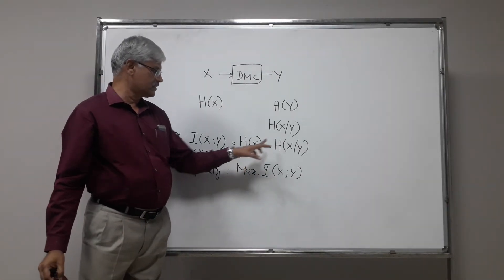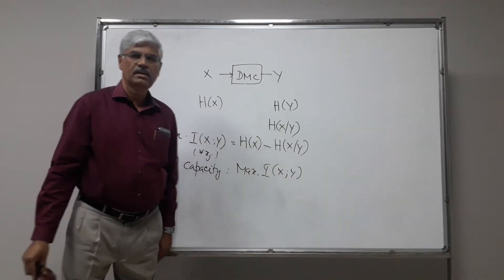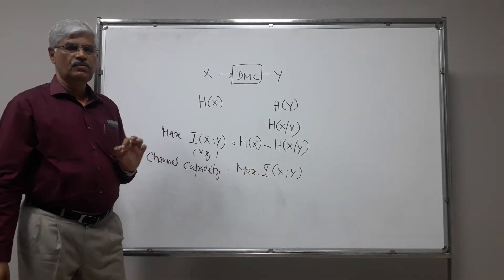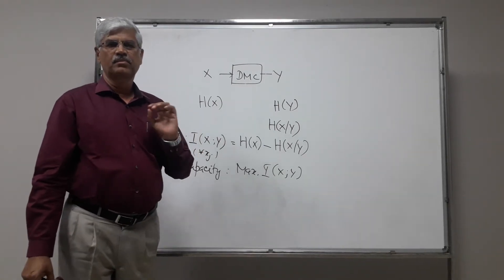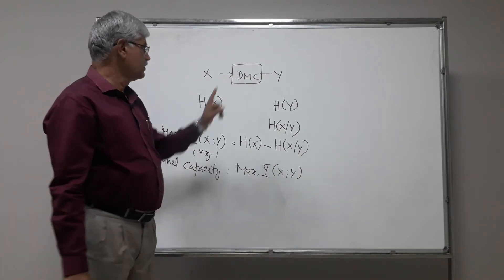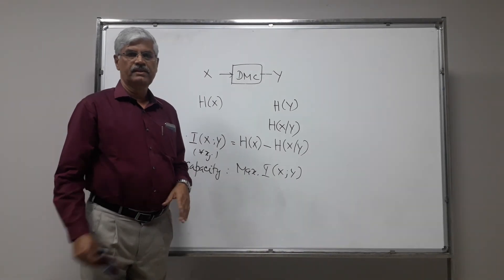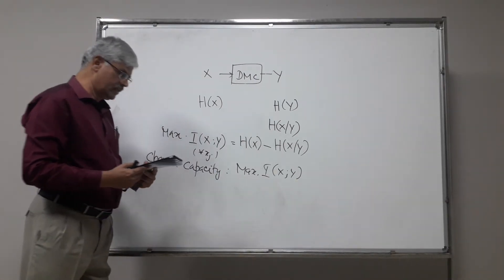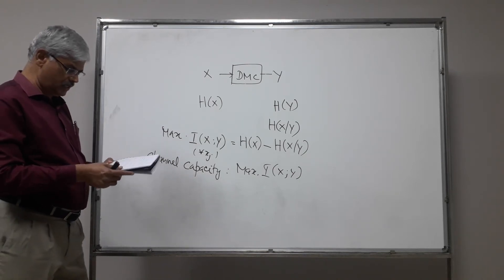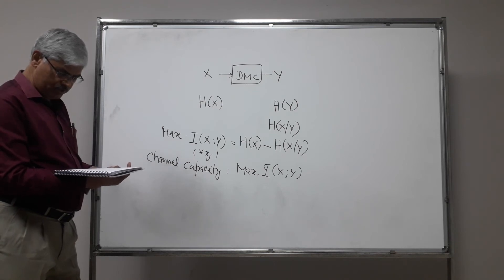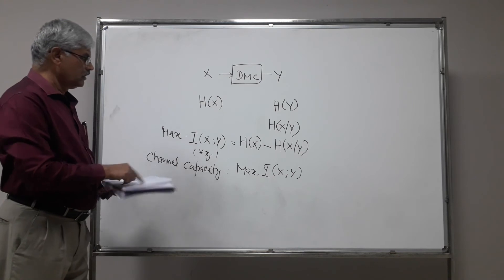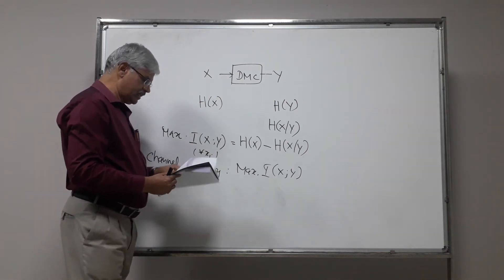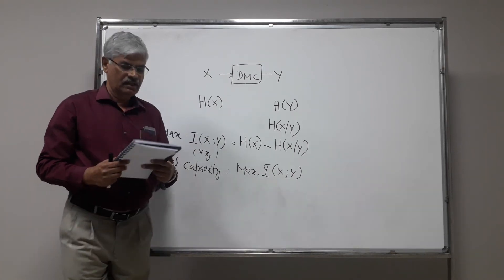If you happen to know H of x and H of x given y, then we can always find the maximum of I(x, y), and that will be the channel capacity. Channel capacity tells us the maximum rate at which we can transmit through this channel for error-free reception. We can write H of x and H of x given y using the probabilities of occurrences of the channel symbols. The channel capacity C is the maximum of this, as stated by the channel coding theorem.